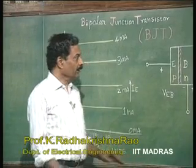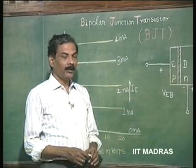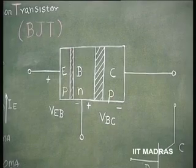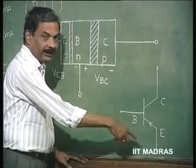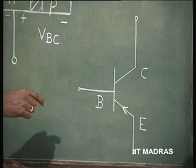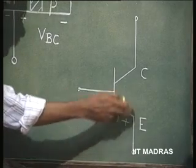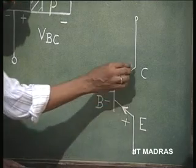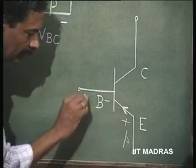In the last class, we understood the functioning of a bipolar junction transistor as an active device. We took for illustration a PNP transistor and explained how the collector current is almost nearly equal to the emitter current. For the PNP transistor, the symbol has the arrow placed at the emitter, and the direction of the arrow always indicates the direction of actual flow of current.